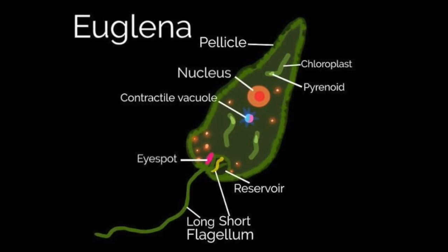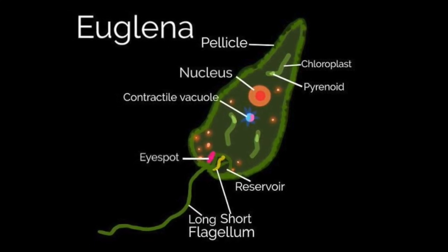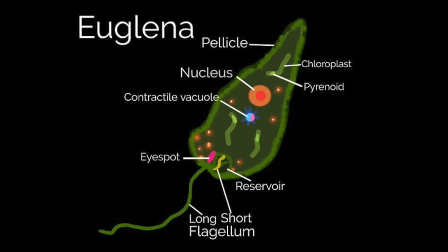Euglena reproduce by mitosis — they split in half, usually in warm, nutrient-rich environments. Since Euglena are unicellular, contain chloroplasts, move about, and sometimes consume other organisms, they have both plant-like and animal-like characteristics, and cannot be classified in the plant or animal kingdoms, but rather they are classified as protists.